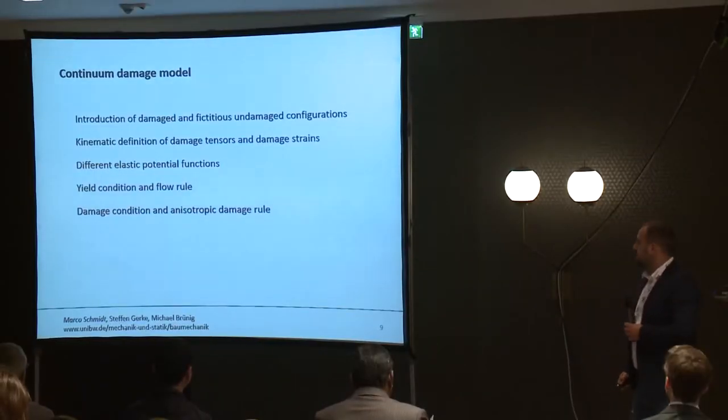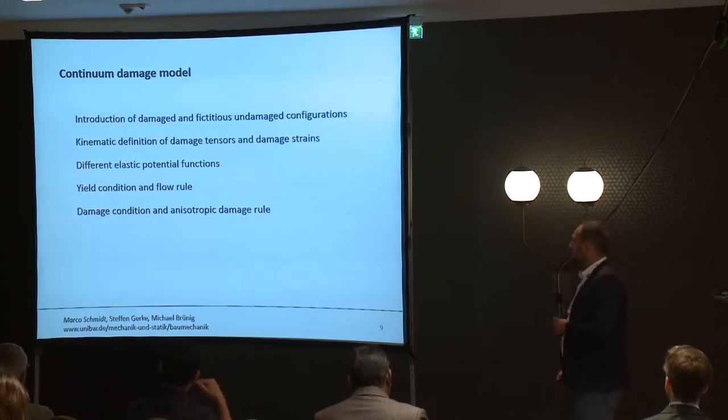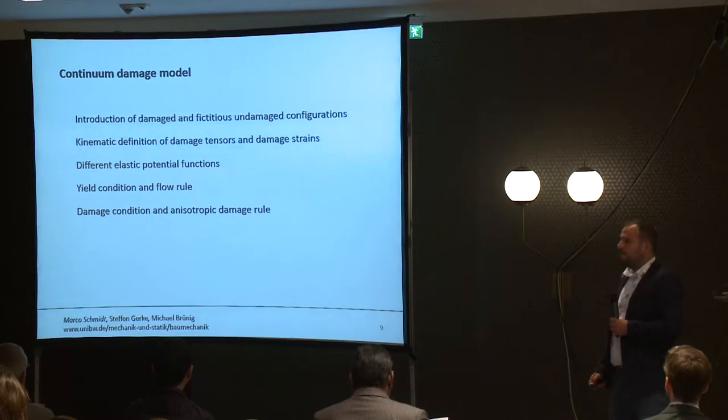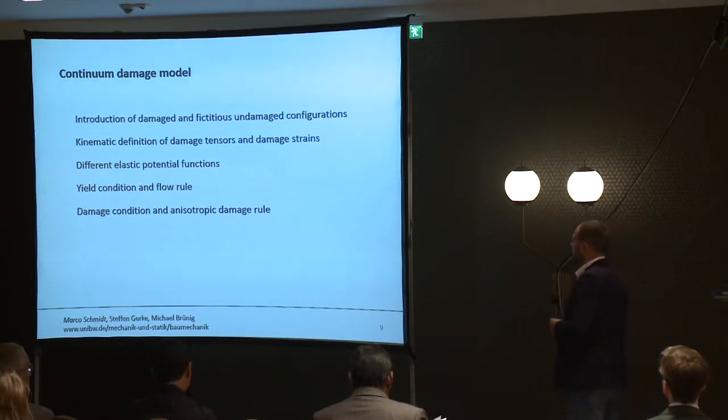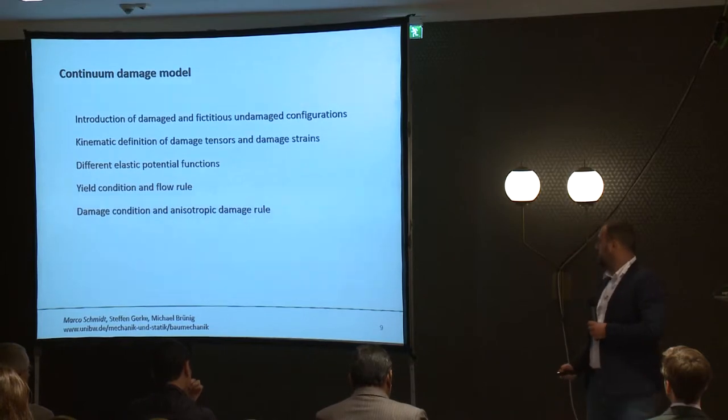In detail, the continuum damage model is based on the introduction of damaged and fictitious undamaged configurations. The model includes a kinematic definition of damaged tensors and damaged strains. In addition, different elastic potential functions are used. And to describe the plastic behavior, we use a yield condition and a flow rule. And in a similar way, for the damage behavior, we use a damage condition and an anisotropic damage rule.